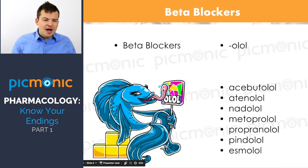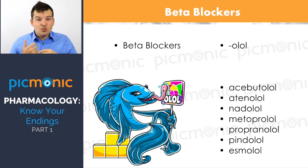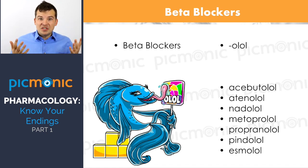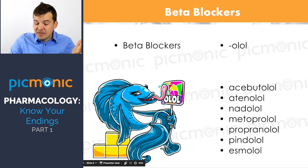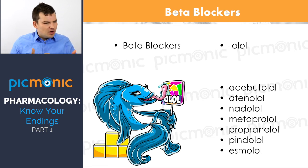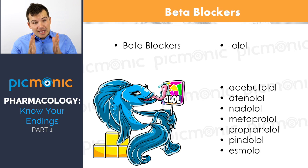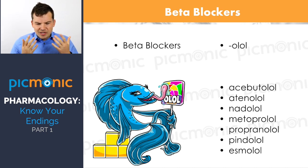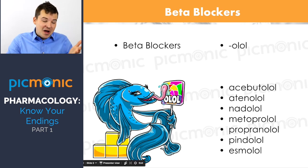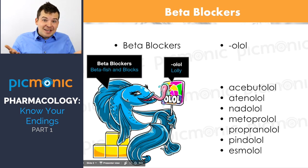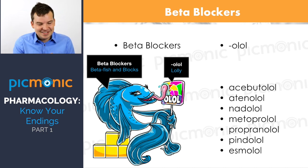The first class I like to start with is beta blockers. When I say beta blockers, you should think: beta fish. In Picmonic, we have a blue beta fish character. Beta blockers — with a few rare exceptions — end in -O-L-O-L. We remember this with a blue beta fish sitting on blocks, licking a lollipop.